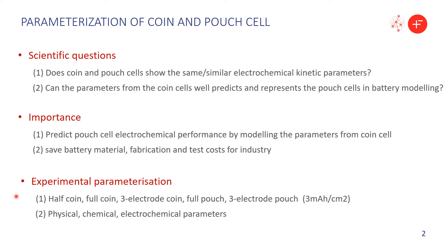Here is what we do on the experimental parameterization. We designed different types of cells, like half-coin, full-coin, three-electrode-coin, four-pouch, three-electrode-pouch. Cells on three µAh per centimeter square electrodes. The parameters will cover physical, chemical, and electrochemical parameters.